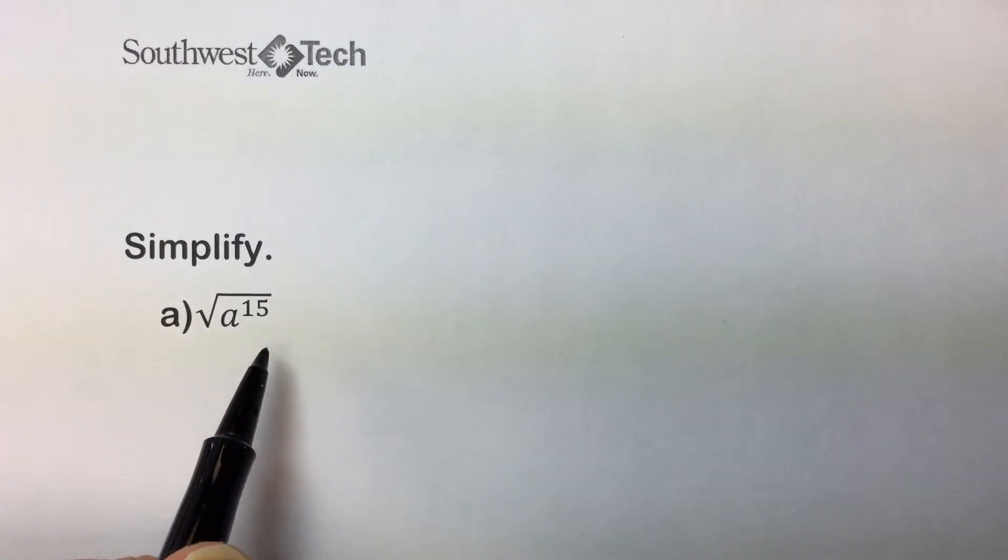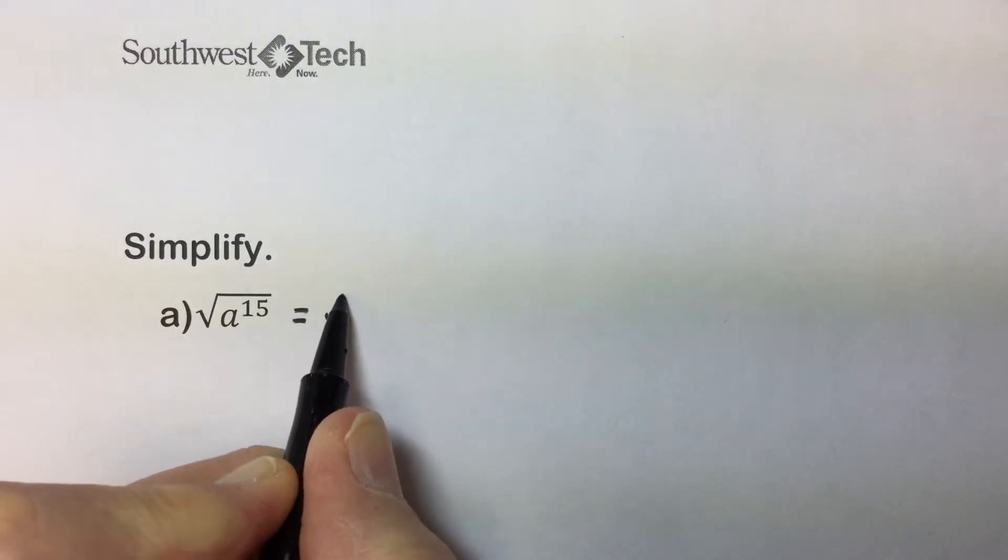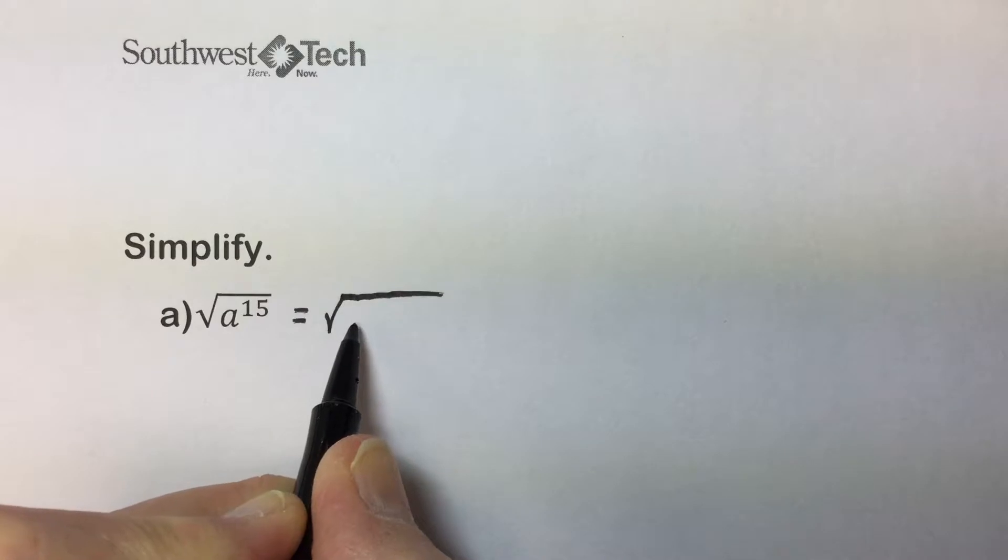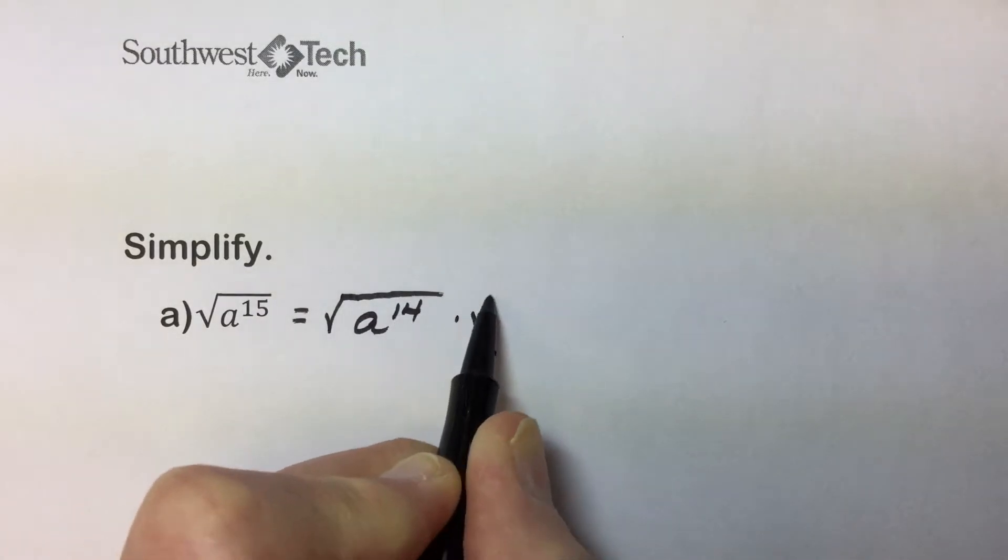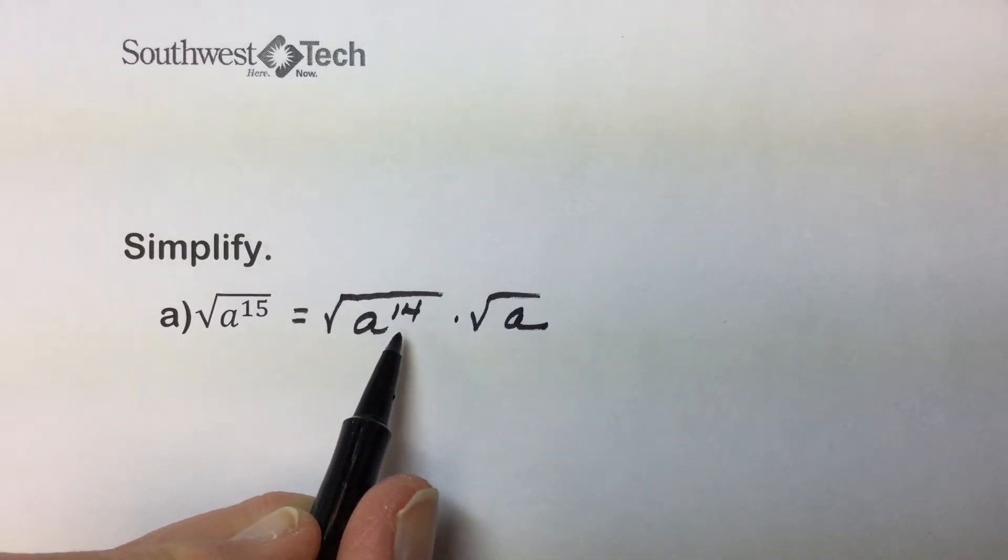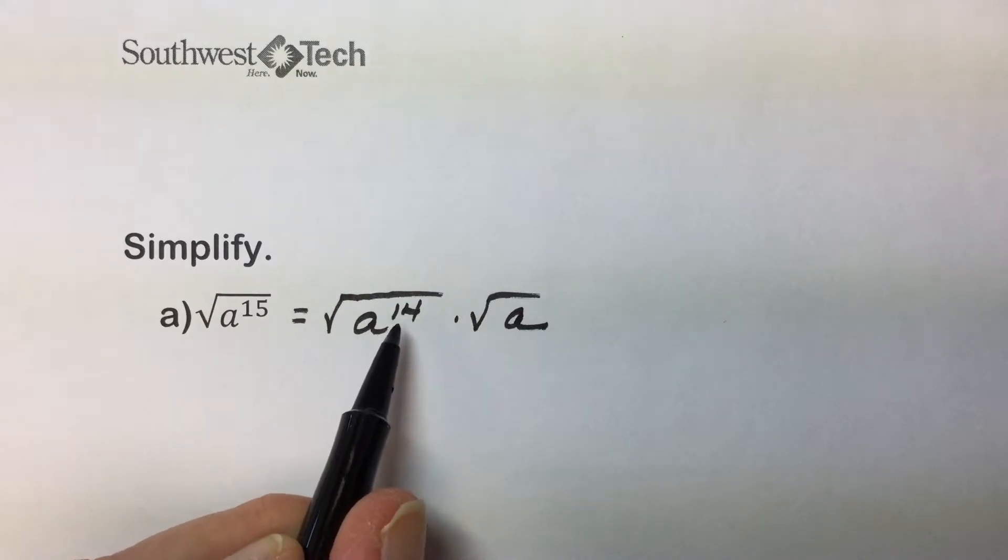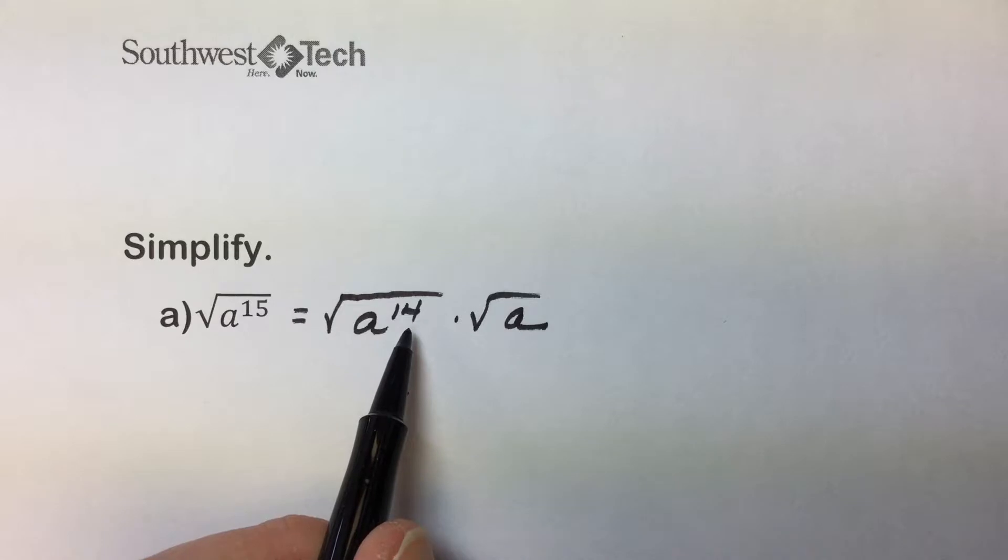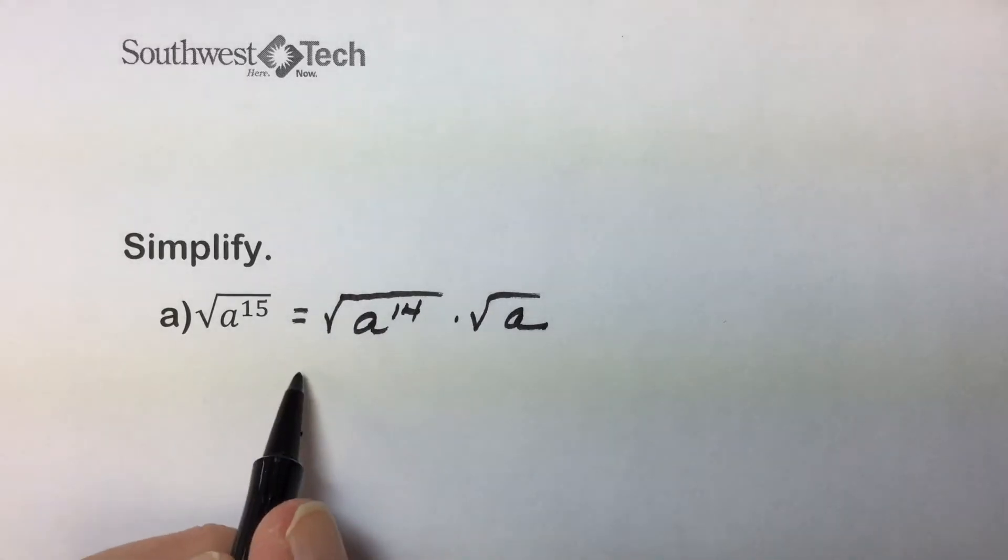So to illustrate that, taking the square root of a^15, we'll use our product rule in reverse and express this as a to the fourteenth times the square root of a. Since a to the fourteenth is a to the seventh quantity squared, or the shortcut, take half of that exponent, it results in a to the seventh power.